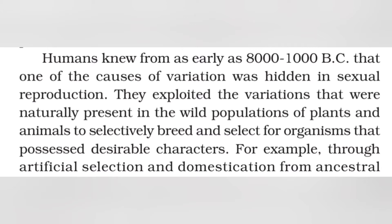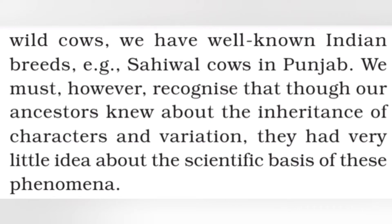Humans knew from as early as 8000 to 1000 BC that one of the causes of variation was hidden in sexual reproduction. They exploited the variations naturally present in wild populations of plants and animals to selectively breed and select organisms with desirable characters. For example, through artificial selection and domestication from ancestral wild cows, we have well-known Indian breeds such as Sahival cows in Punjab. However, though our ancestors knew about inheritance of characters and variation, they had very little idea about the scientific basis of this phenomenon.